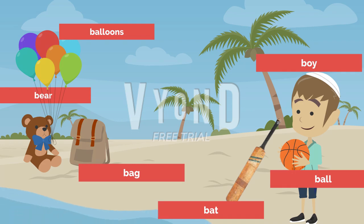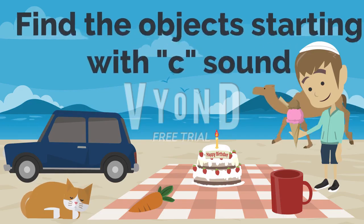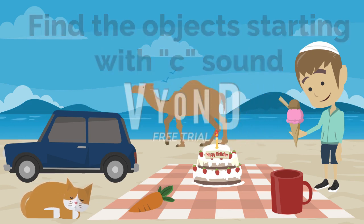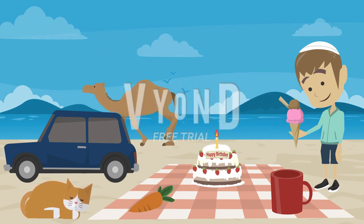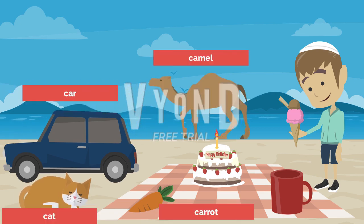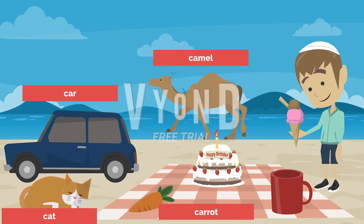Now can you find the object starting with the C sound? Very good! C — Camel C. Car C. Cat C. Carrot C. Cake.